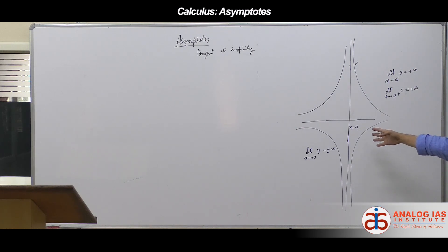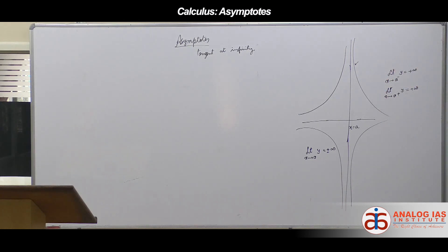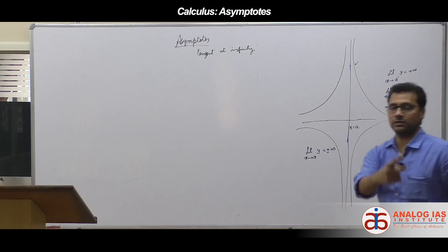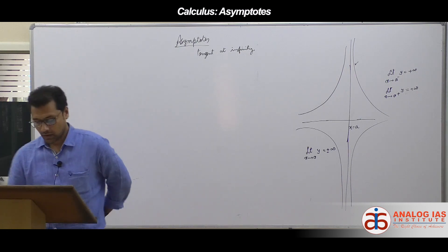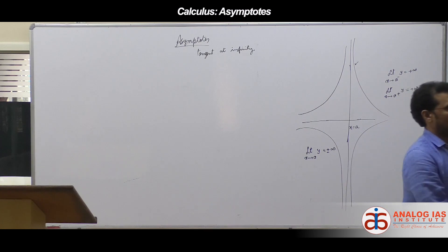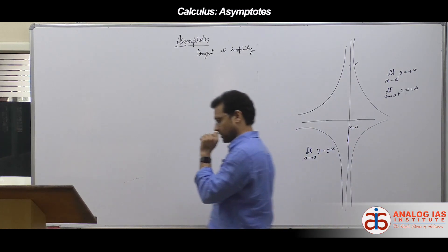It's only in the vertical asymptote case that x doesn't go to infinity — x goes to a, therefore we call x = a as one. There are two types of asymptotes basically: one is a vertical asymptote, the other is oblique asymptotes. Vertical asymptotes have slope as infinity; oblique asymptotes have finite slope. Even horizontal asymptotes, for which slope = 0, come under oblique asymptotes. First, let's take vertical asymptotes — asymptotes parallel to the y-axis.